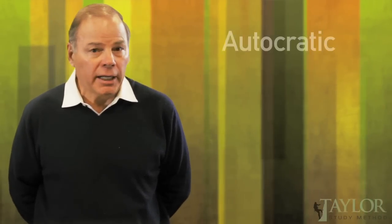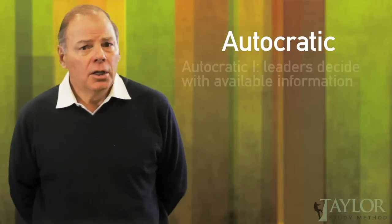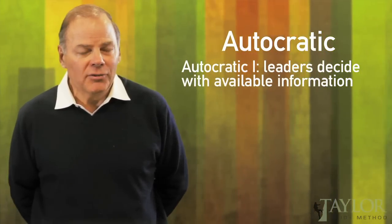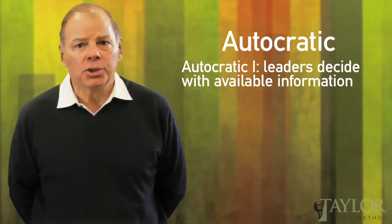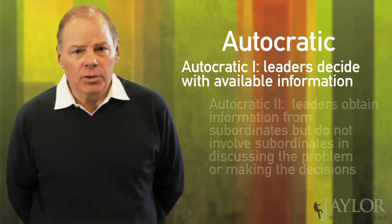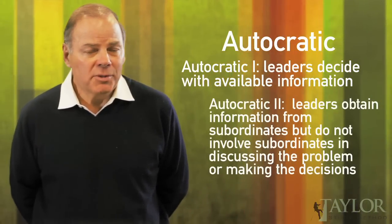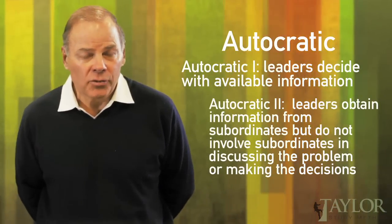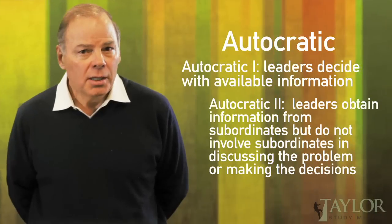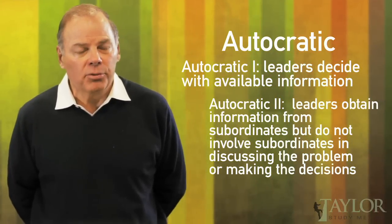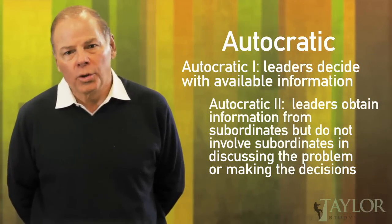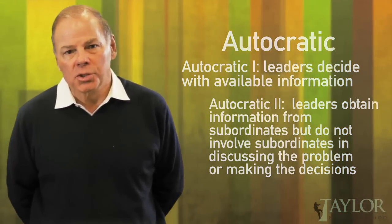It begins with five decision-making styles, the first of which is autocratic, and there are two types. The first is where leaders decide with the available information. The second is where leaders obtain information from subordinates, but do not involve them in discussing the problem or in making decisions.